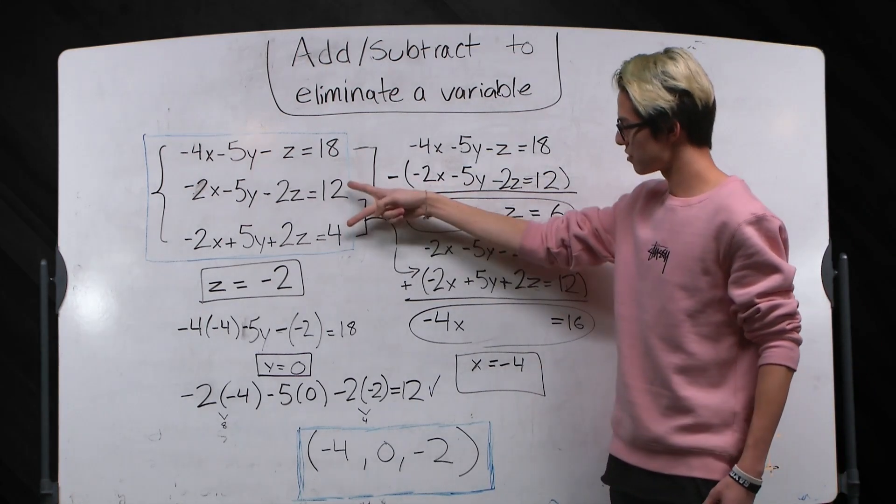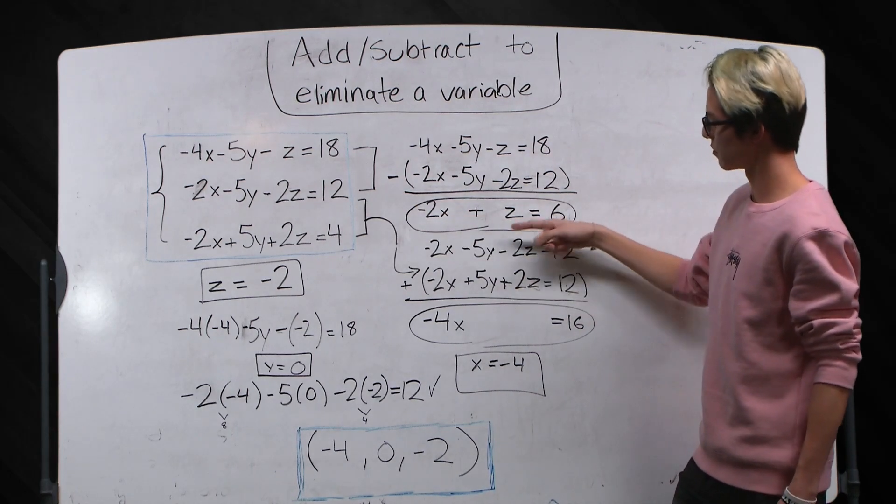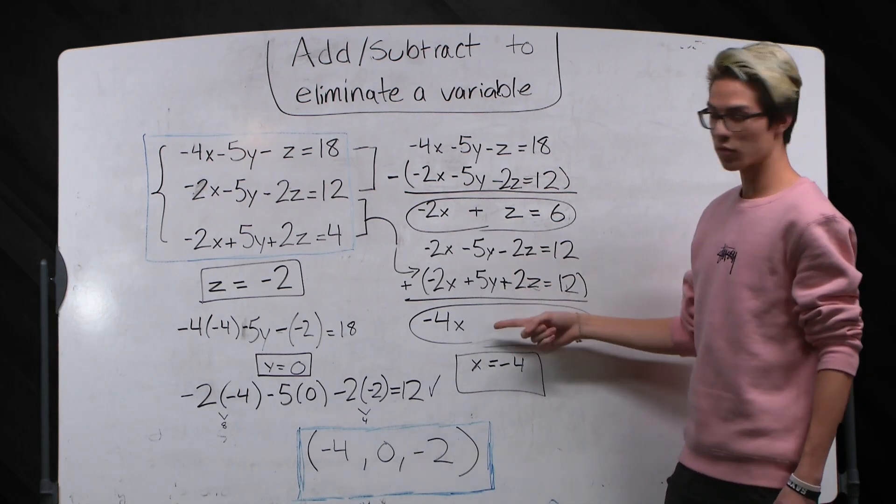I'm going to do this again with these two equations and I'm going to add them together so I can eliminate y and I get minus 4x equals 16.